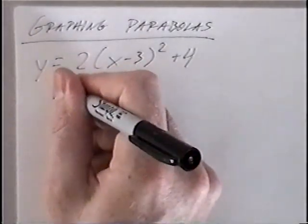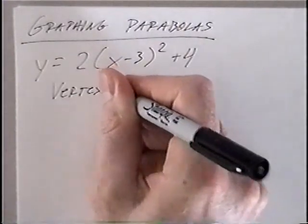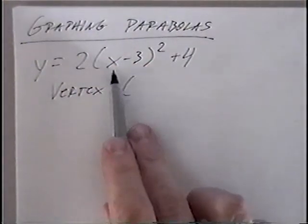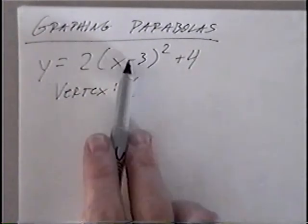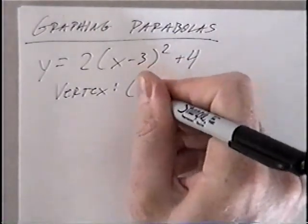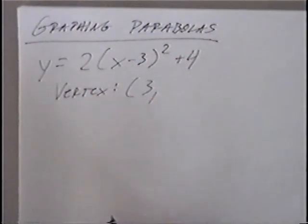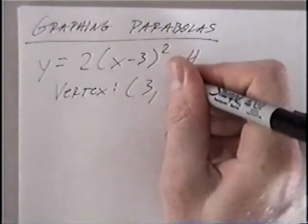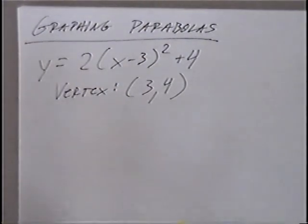The first step is to find the vertex. The x value would be inside the parenthesis next to the x. The minus sign is already part of the standard form, so the x value would just be 3. And the y value would be k, the number outside, which would be 4. So the vertex would be (3, 4).